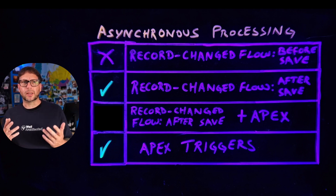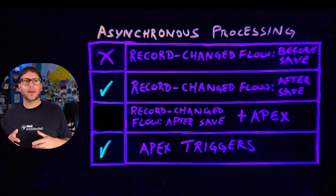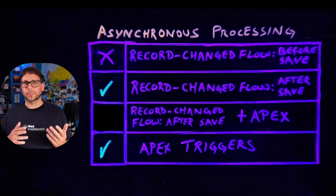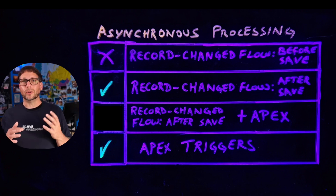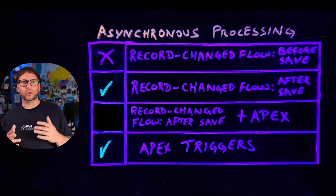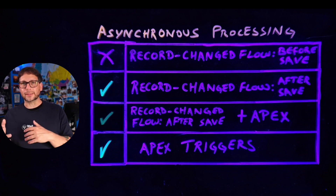Flow offers a fixed number of retries and some basic error handling via a fault path, but Apex has a lot more flexibility. For a mixed use case, you can call System.enqueueJob from a queueable Apex class and make it an invocable method, which you can then access from Flow.